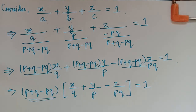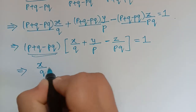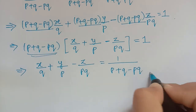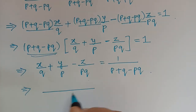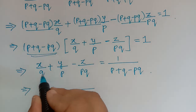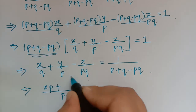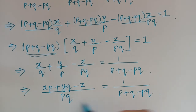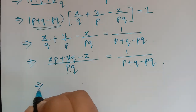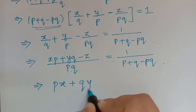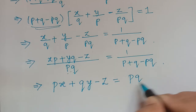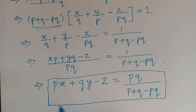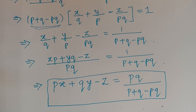Taking (p+q-pq) to the right: x/q + y/p - z/(pq) = 1/(p+q-pq). Taking LCM as pq on the left: (xp + yq - z)/pq = 1/(p+q-pq). So px + qy - z = pq/(p+q-pq), which is the required partial differential equation.